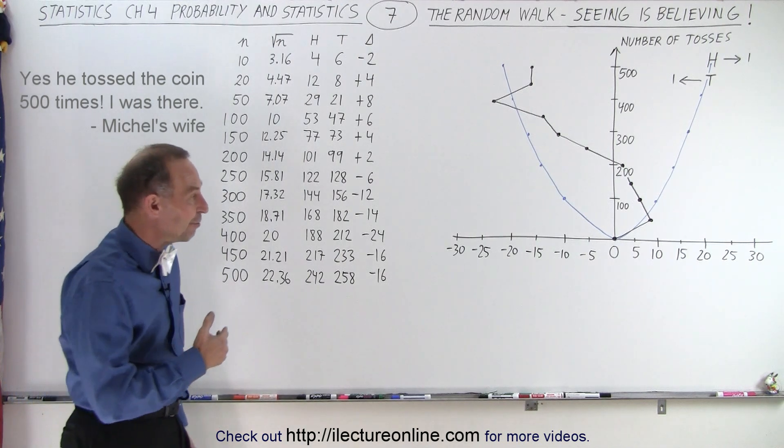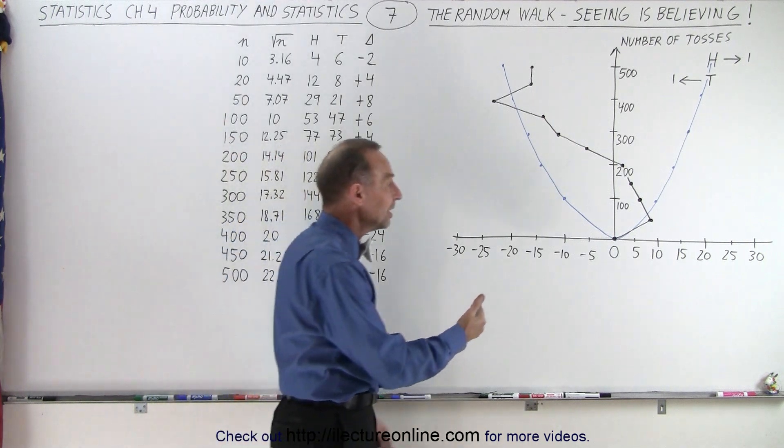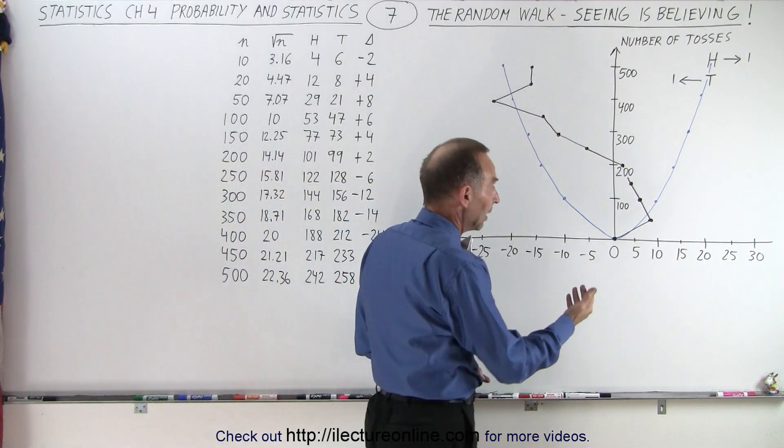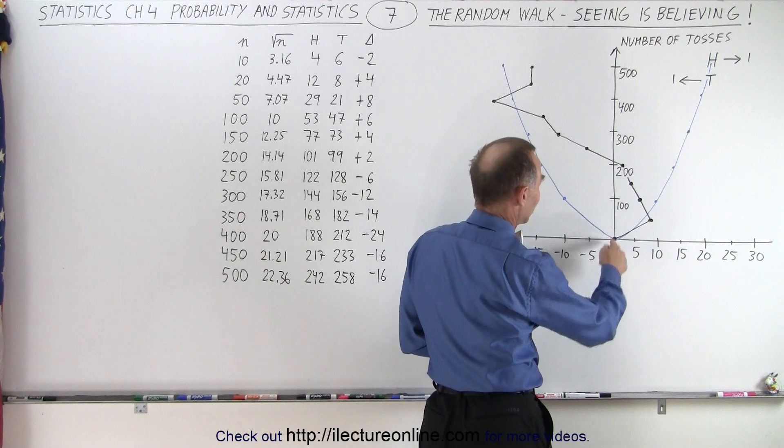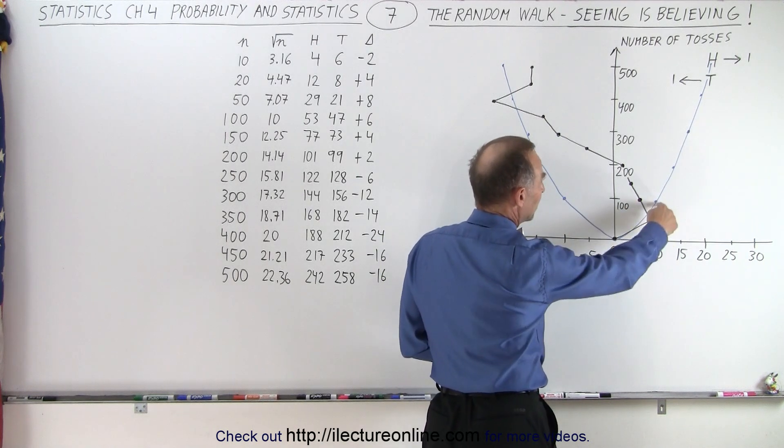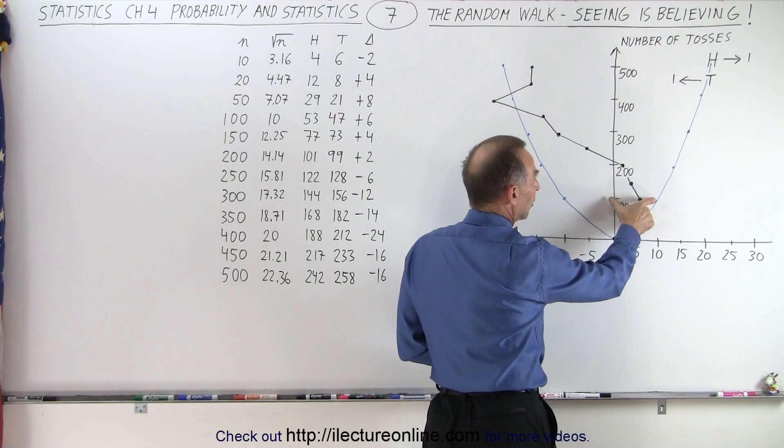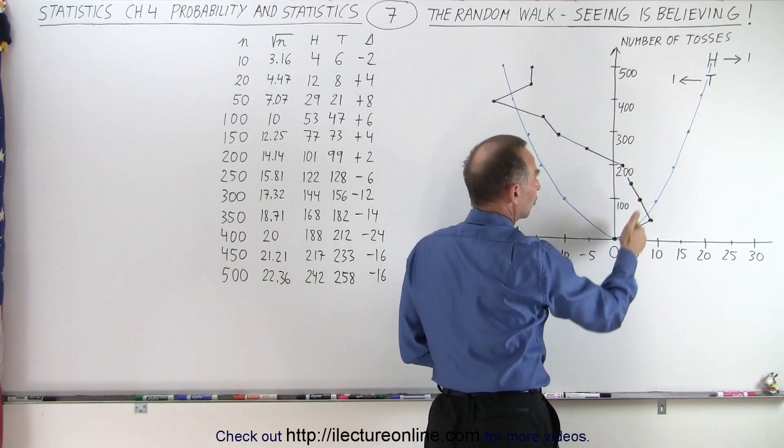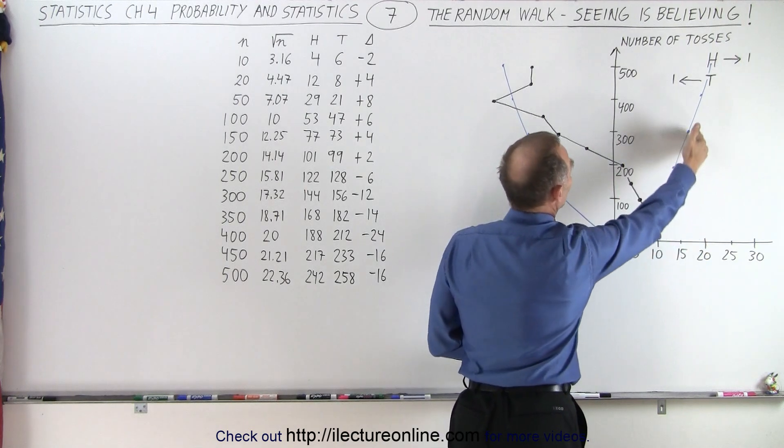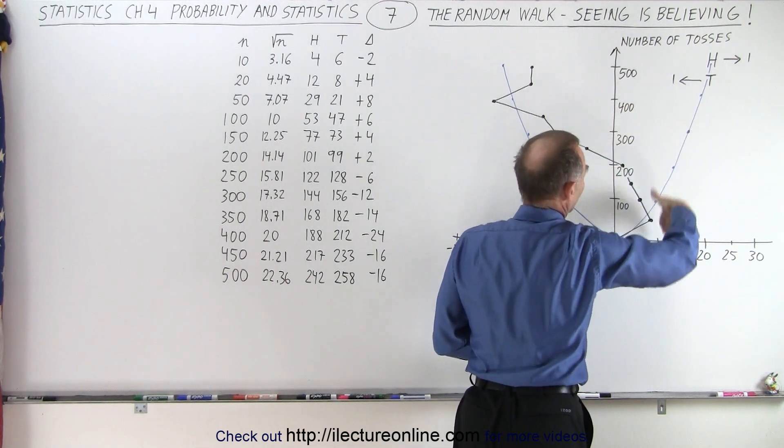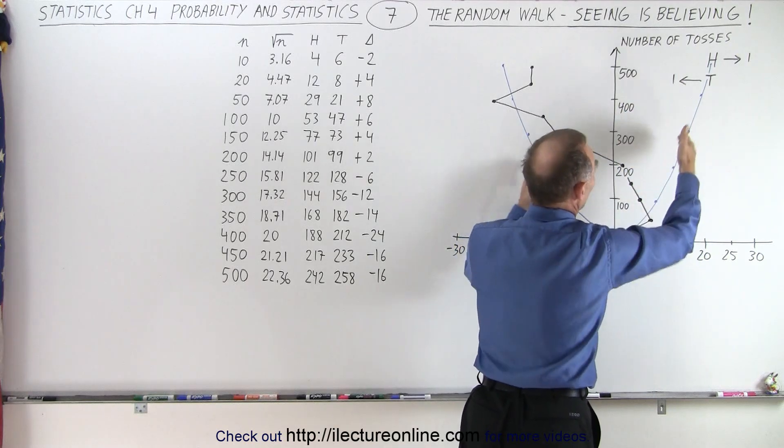Now if we go in intervals of 50, you can see that the random walk theory indicates that after 100 tries you would be 10 steps away or 10 units away from the origin. After 400 tries you'd be 20 units away and so forth.